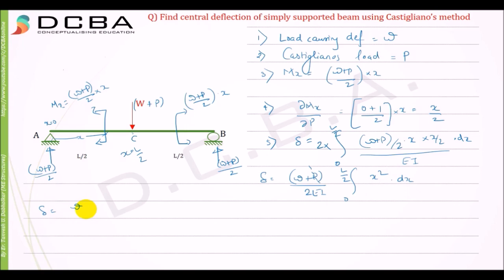Now we have to integrate this. So delta is equal to W upon 2EI, integration of X square is X cube by 3, going from 0 to L by 2, which is equal to W upon 2EI, L by 2 the whole cube is L cube upon 8 into 3, so it is equal to WL cube upon 48EI. Since it is positive, it means it is in the direction of our imaginary load downwards.